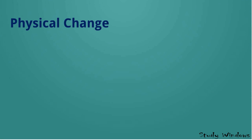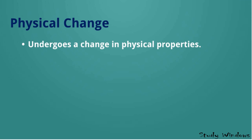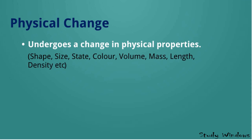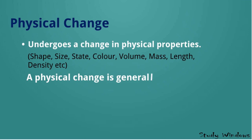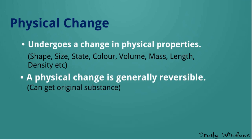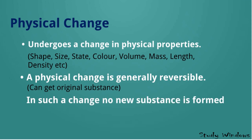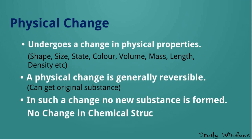Now, what is physical change? A physical change undergoes a change in physical properties — shape, size, state, color, volume, mass, length, density. A physical change is generally reversible, but it may be irreversible also. Reversible means it can return to its original state. In such a change, no new substance is formed and there is no change in the chemical structure of the substance.